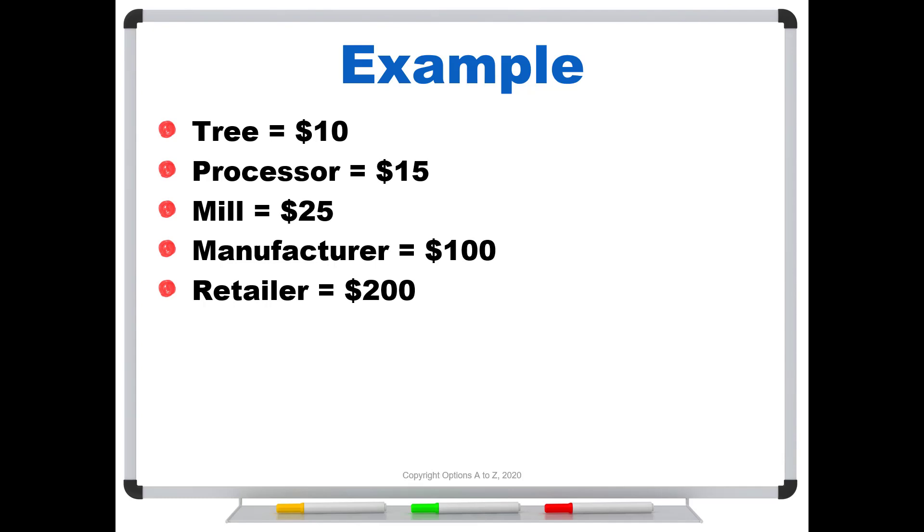Now there's another way we could have calculated it. I could say that in step one here, Georgia Pacific added $10 of value. The processor paid 10 and sold it for 15. So they added $5 of value, not 15, but they added five. The mill pays 15, sells it for 25. They've added 10.